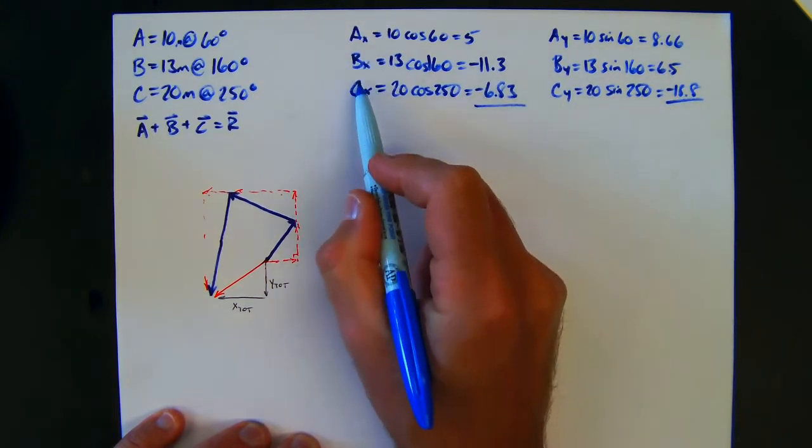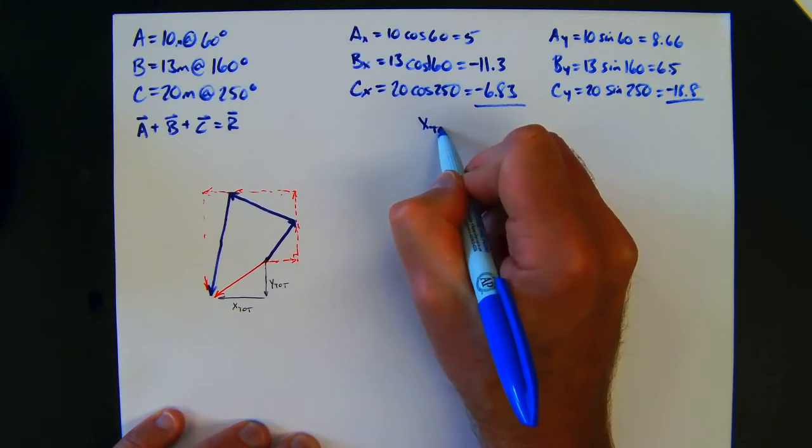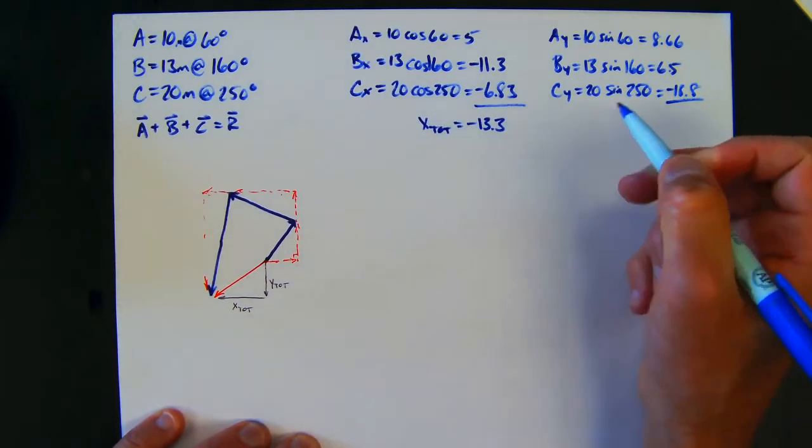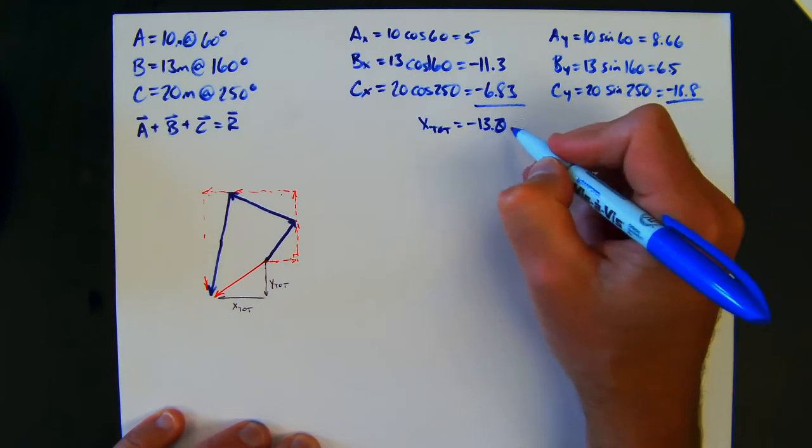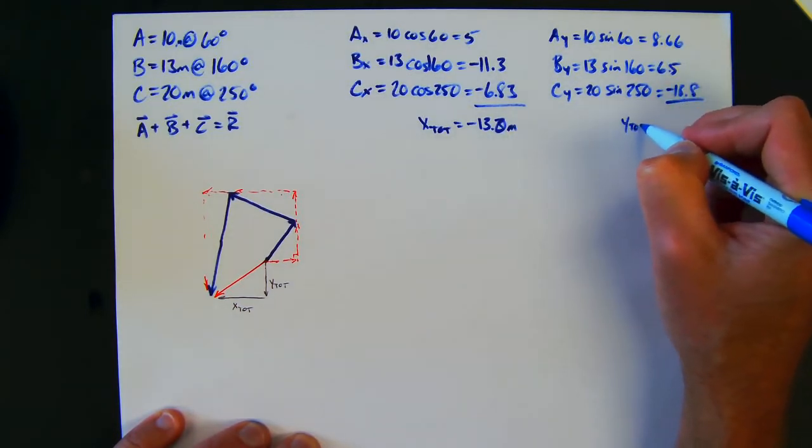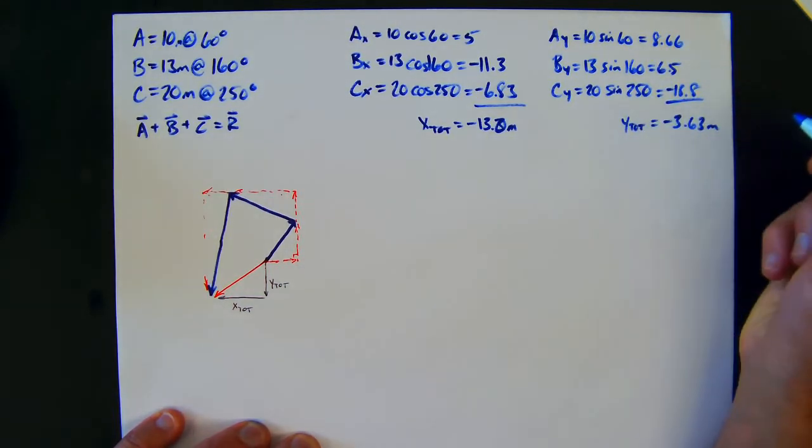Now remember, because these are all in the x direction, we literally could just add those up. So when we add those, we're going to get an x total which will be negative 13.0, and that'll be meters. And we literally can add these up and we'll have a y total which will be negative 3.63 meters.